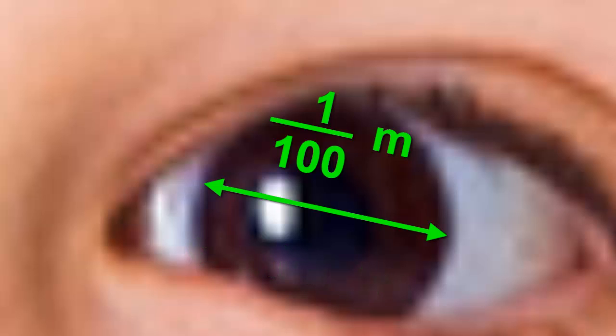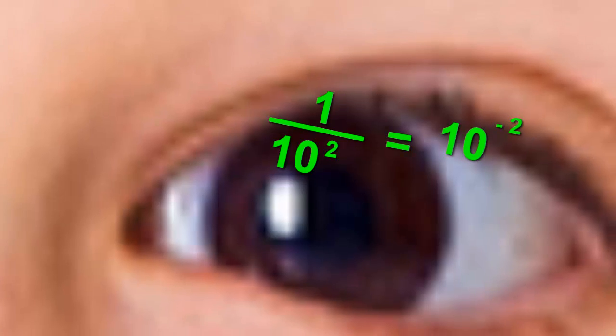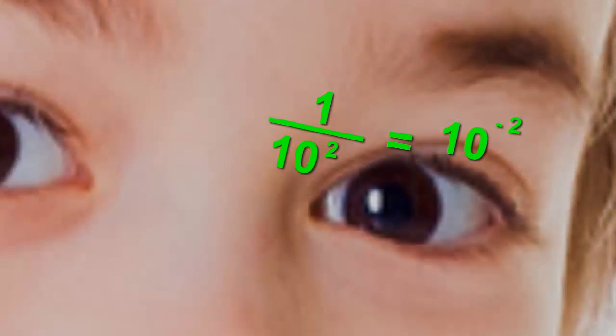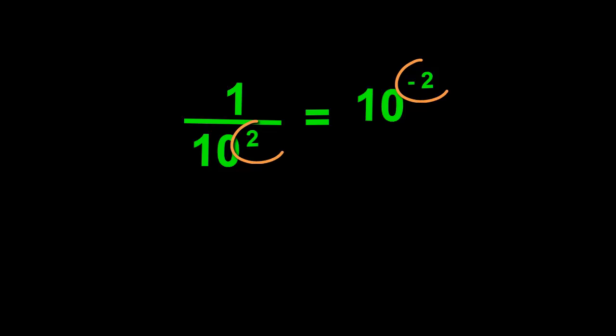We're going to show you a trick here. One on a hundred is the same as one on ten squared because a hundred is ten squared. Scientists often write this as ten to the negative two. That's like ten squared except that the two has a negative in front of it. This negative is telling us that the squaring is on the bottom of the fraction instead of the top. The cool thing is that it's quicker to write it this way.